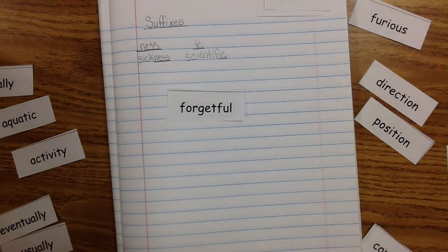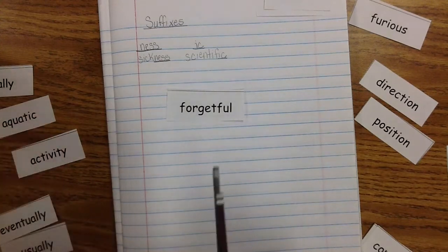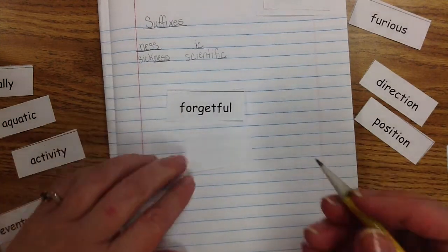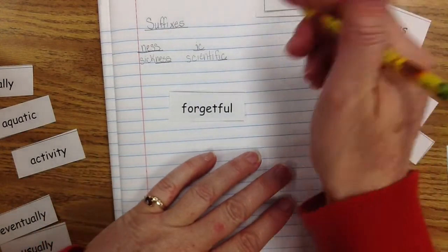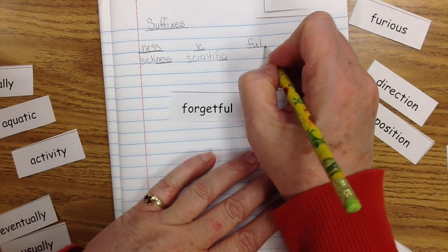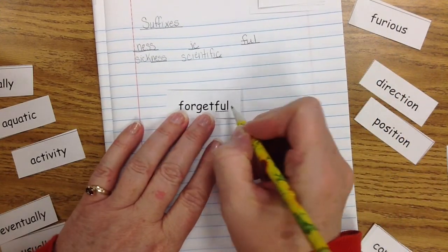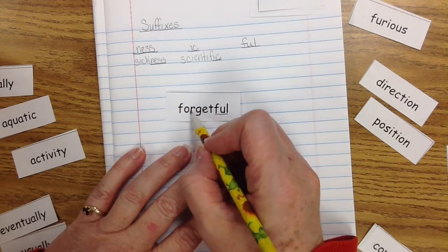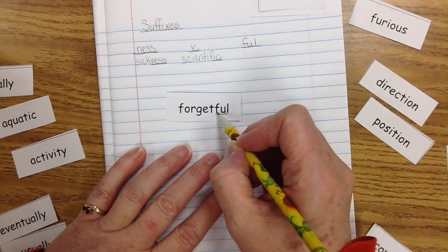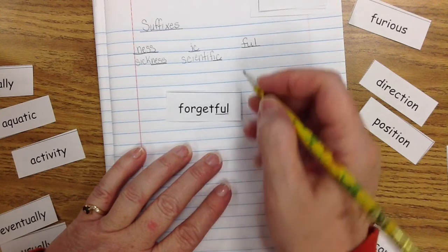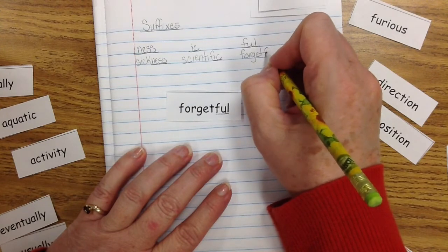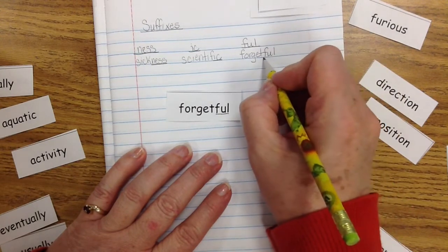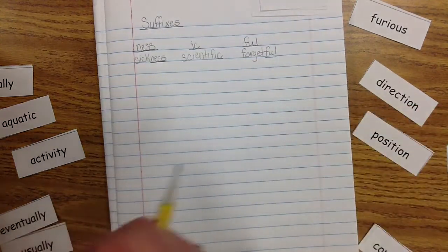Let's try 'forgetful.' What's the base word? Forget, right. So -ful is our suffix. Let's put that up there and underline -ful: F-U-L. Spell the base word: F-O-R-G-E-T. Now spell the suffix: F-U-L. Forgetful: F-O-R-G-E-T-F-U-L. Underline the suffix. Very good. We've got three done.